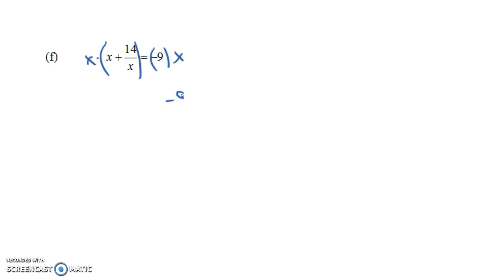And when we do this, notice the right-hand side is just minus 9x. The left-hand side, we get x times x, that's x squared, plus x times 14 over x. But x times 14 over x is just 14, the x's divide out. And then if we add 9x to both sides, we get x squared plus 9x plus 14 equals 0. Well, notice what we have here is a quadratic equation.